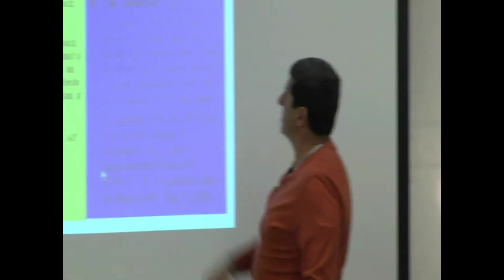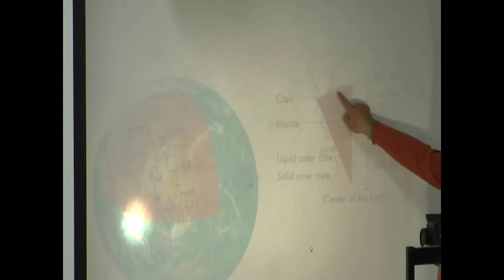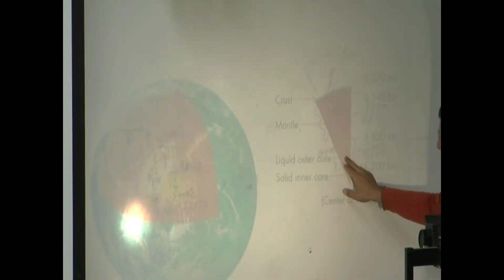The crust is about 30 kilometers thick. First you get the crust right here. This is a cutaway. Then you got the mantle, then the liquid outer core, then the solid inner core.